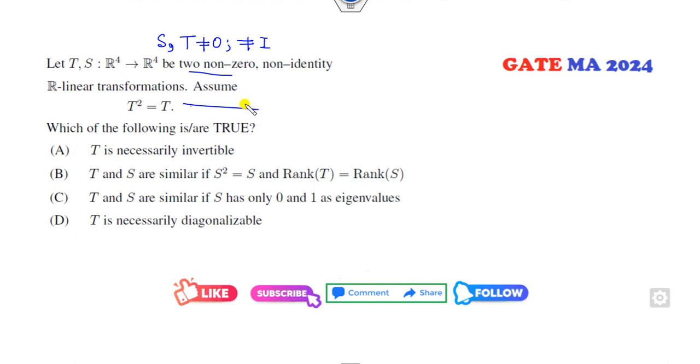and non-identity linear transformations such that T squared equals T. You have to think about whether this is the characteristic polynomial. No. Why? Because the degree is 4 but this is 2, so definitely it is not a characteristic polynomial. This polynomial is called the annihilating polynomial.